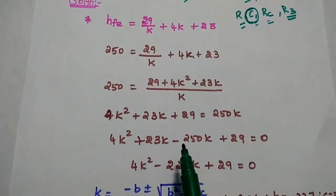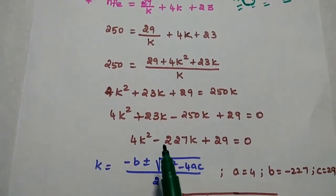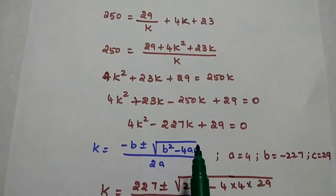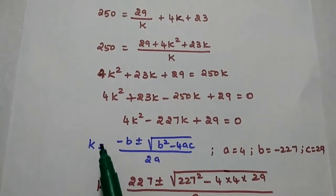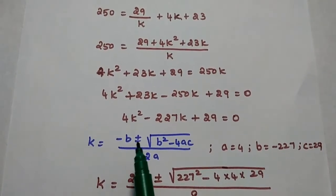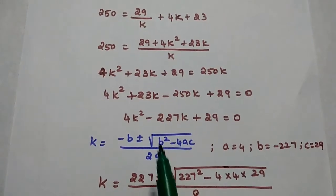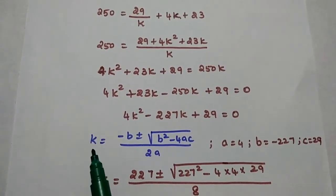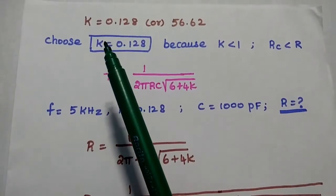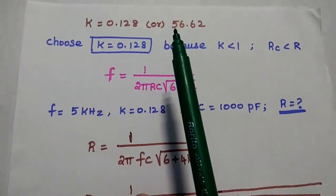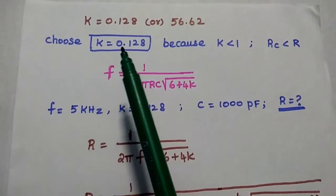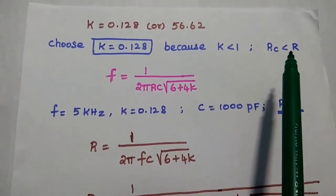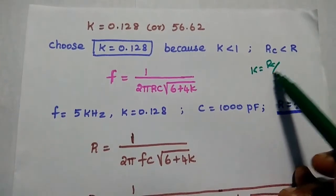Moving terms gives the quadratic equation: 4K² − 227K + 29 = 0. Using the quadratic formula — minus B plus or minus square root of B²− 4AC, divided by 2A — with A = 4, B = −227, C = 29, we get K = 0.128 or 56.62. We choose K = 0.128 because K must be less than 1, since K = RC/R means RC is less than R.